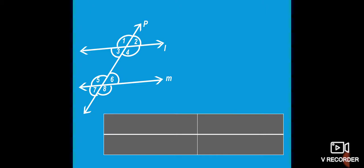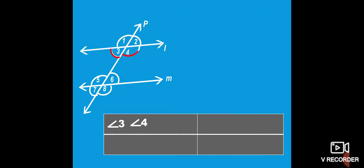These eight angles have special names. Angles 3, 4, 5, and 6 are inside these two lines L and M — they are inside of these two lines. Therefore, their name is interior angles. These are inside of the lines.